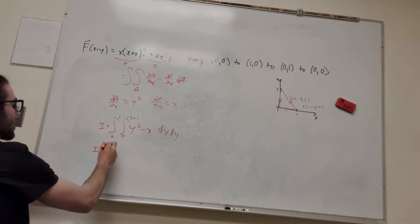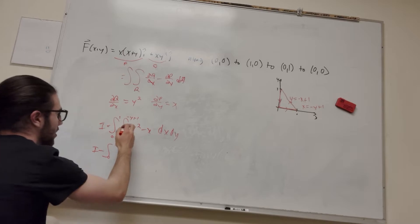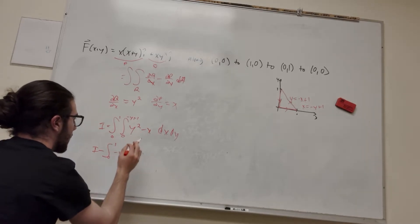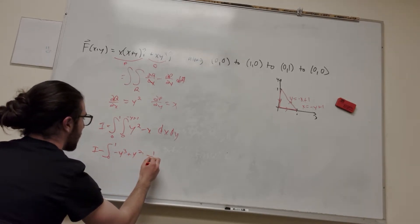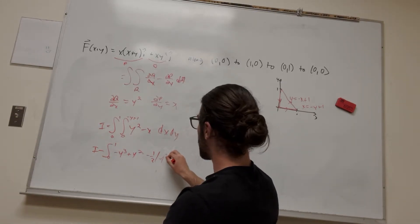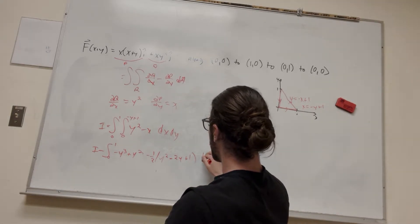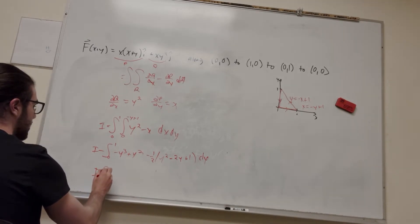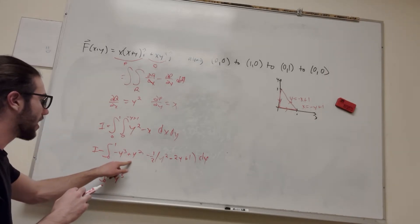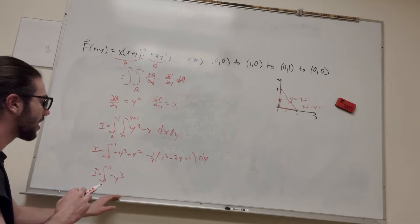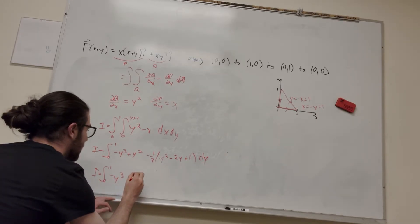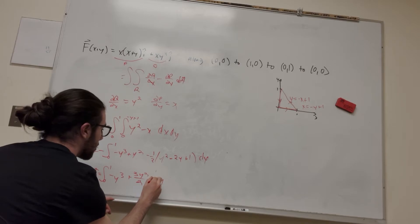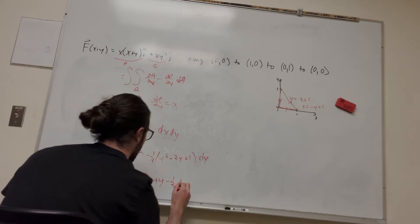So I is equal to, I'm going to skip a couple steps because I'm sure you guys know how to do integration by now. So there's going to be an x here, so it's going to be negative y to the third plus y squared, and then it's going to be x squared over 2, so minus 1 half. So it's this squared, it's going to be y squared minus 2y plus 1 dy. So let's simplify this. So we have 1 half y squared minus 1 half y, so it's going to be plus 3y squared over 2, and then we're going to have plus y, and then a minus 1 half dy. So we can integrate this now.